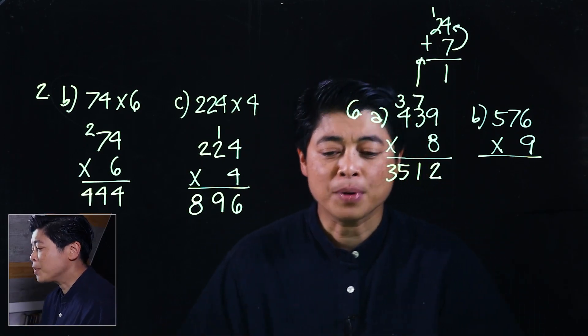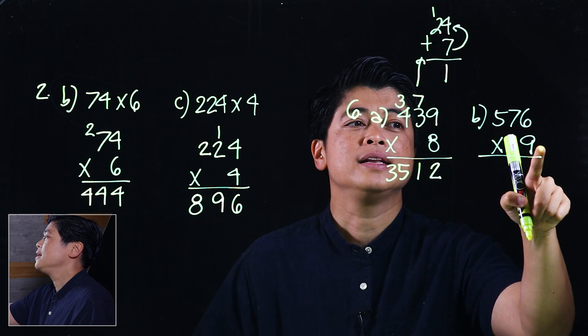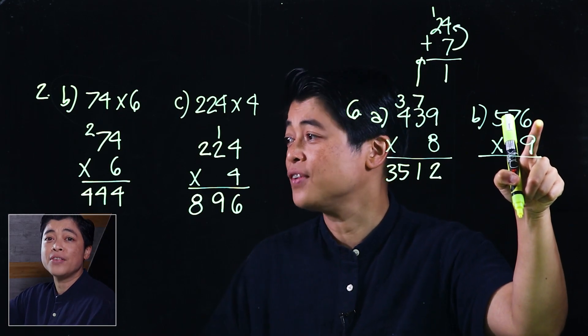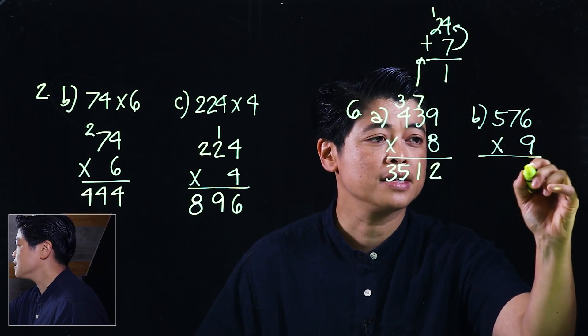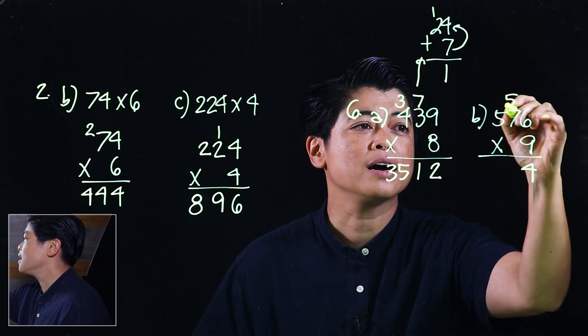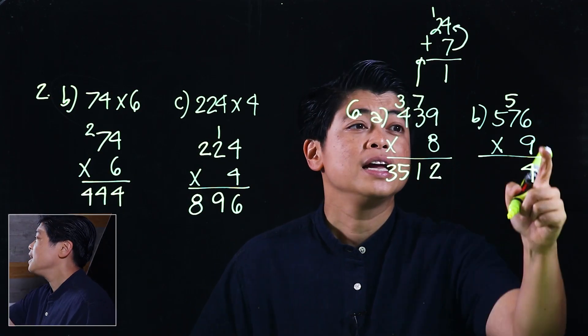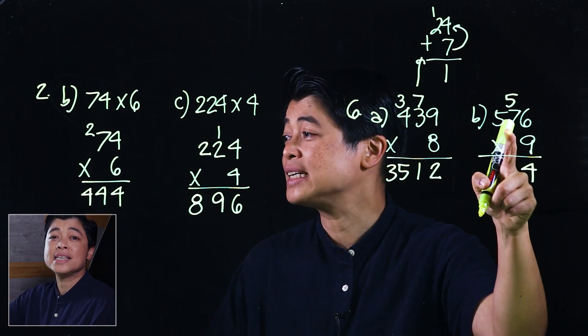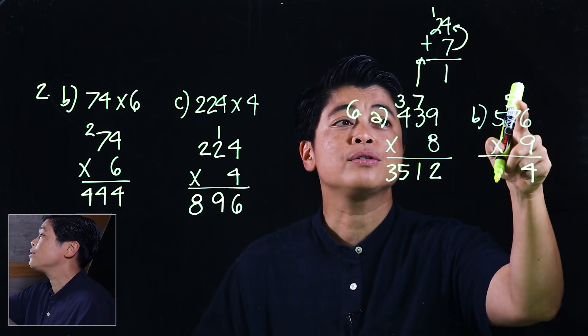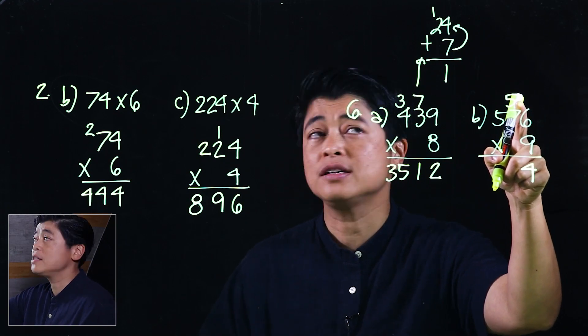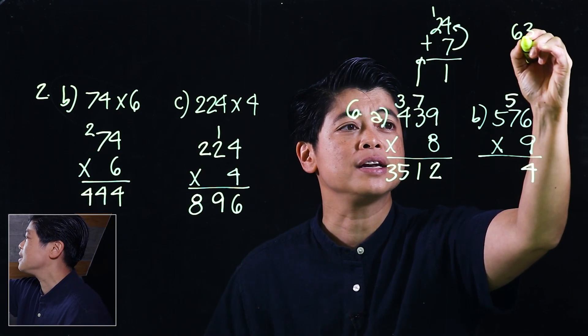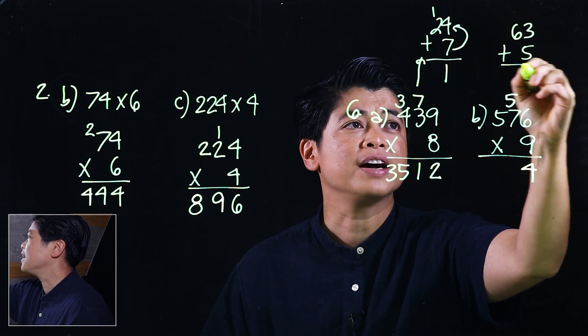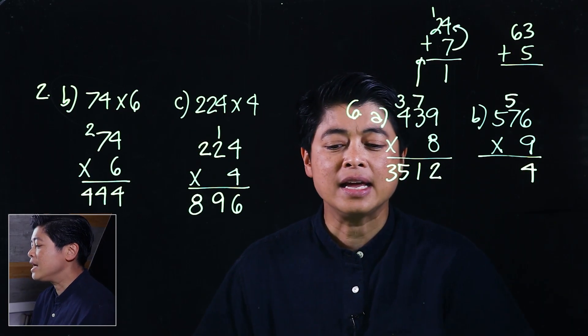Our last problem will be 9 times 6 which is 54, so that means this will be a 4 and that will be a 5. If we multiply 9 times 7 that will be 63, but we need to add. If it's too hard for the kids, we put it up here: 63 plus 5.